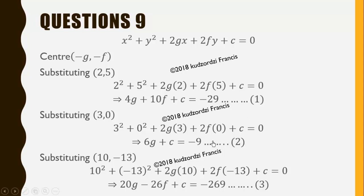So now we are going to use our calculators to solve equation 1, equation 2, and equation 3 simultaneously. When you reach here, that is what you are supposed to do, because you are not being tested on your knowledge of solving simultaneous equations in 3 variables, but on the knowledge of circle geometry and finding the center of the circle. So when you reach here, use a calculator to find the values of g, f, and c.